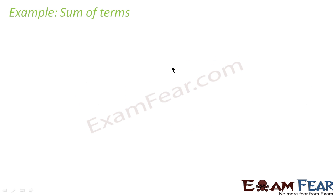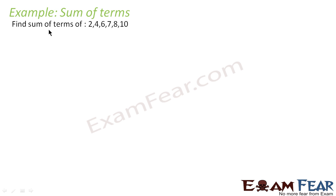Example of the sum of terms. We are told to find the sum of terms of a sequence, but we are not told whether it is AP or GP. First we need to find whether it is AP or not. The sequence is 2, 4, 6, 7, 8, 10.